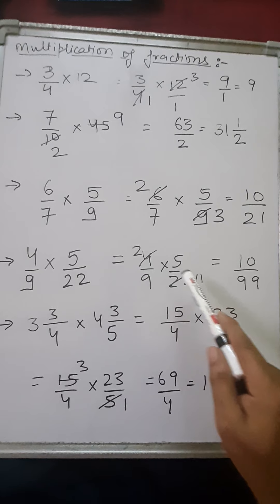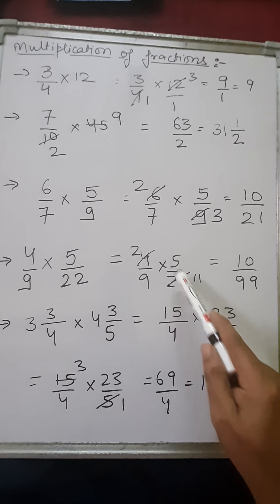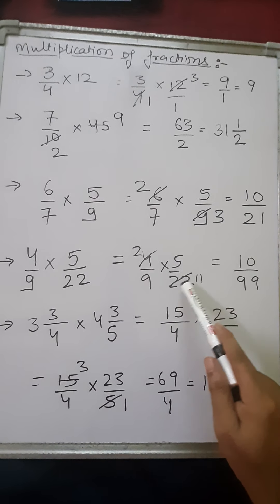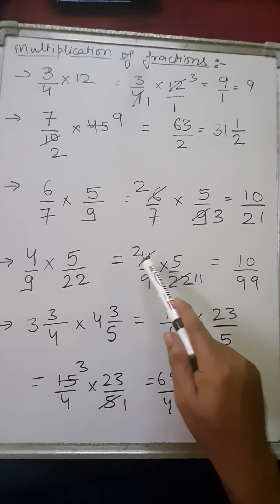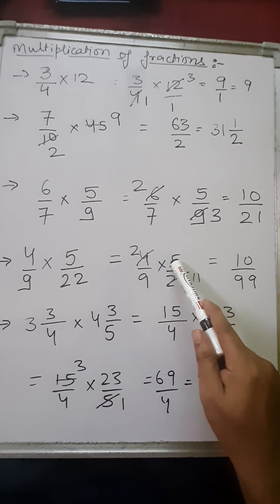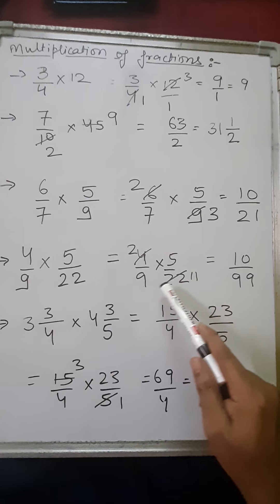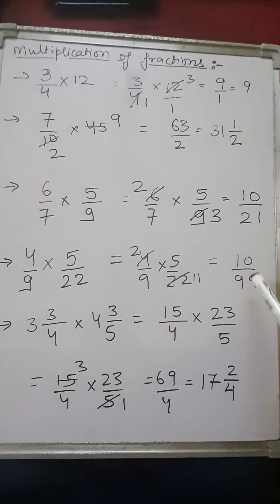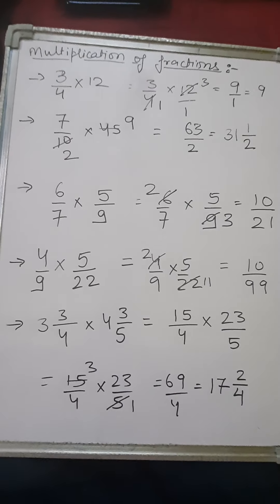2 twos are 4 and 2 elevens are 22. And when you multiply, 2 and 5, what will we get? 10. 5 twos are 10 and 9 into 11 is 99. 10 upon 99 will be the answer.